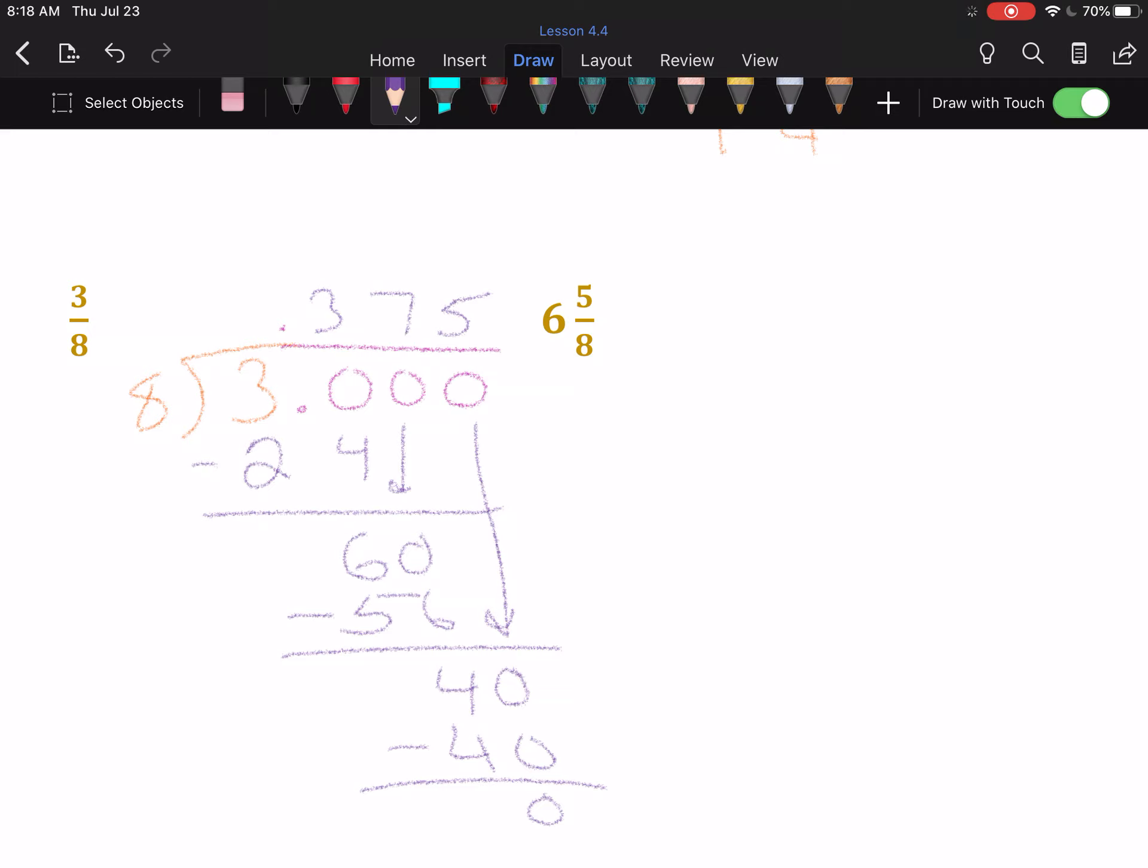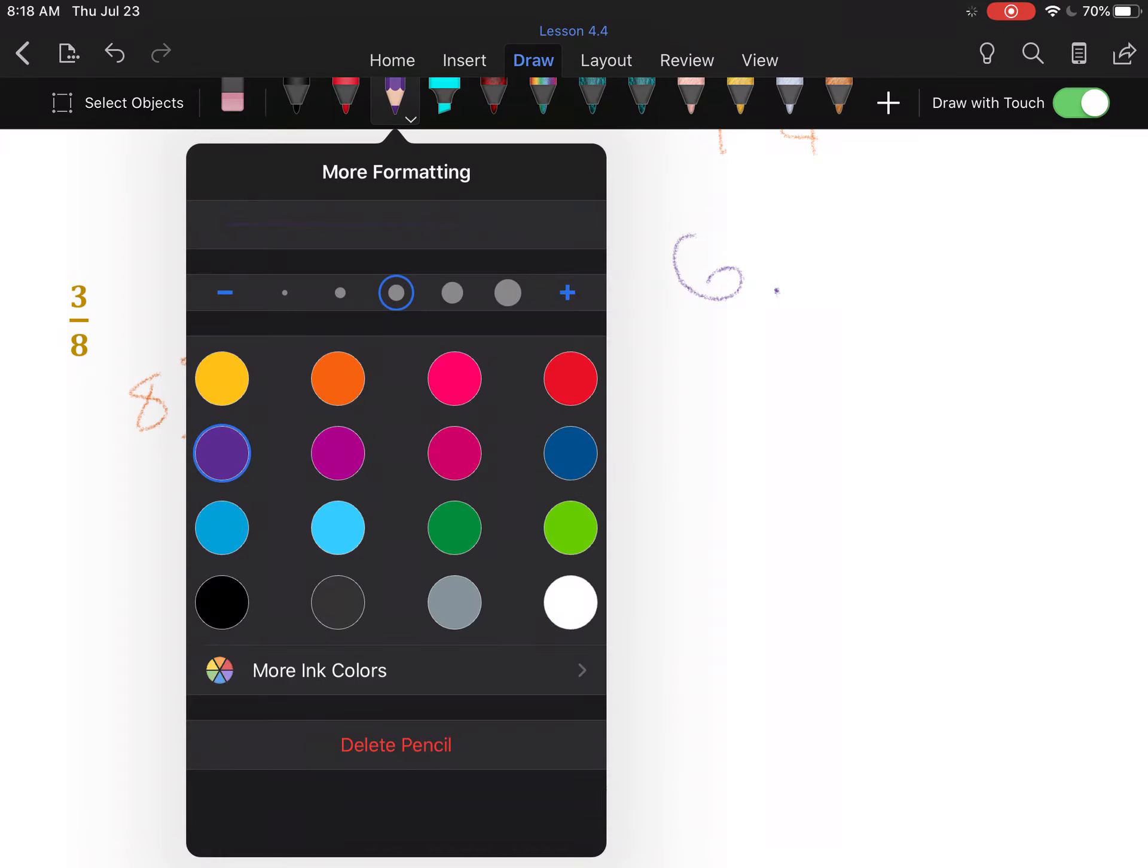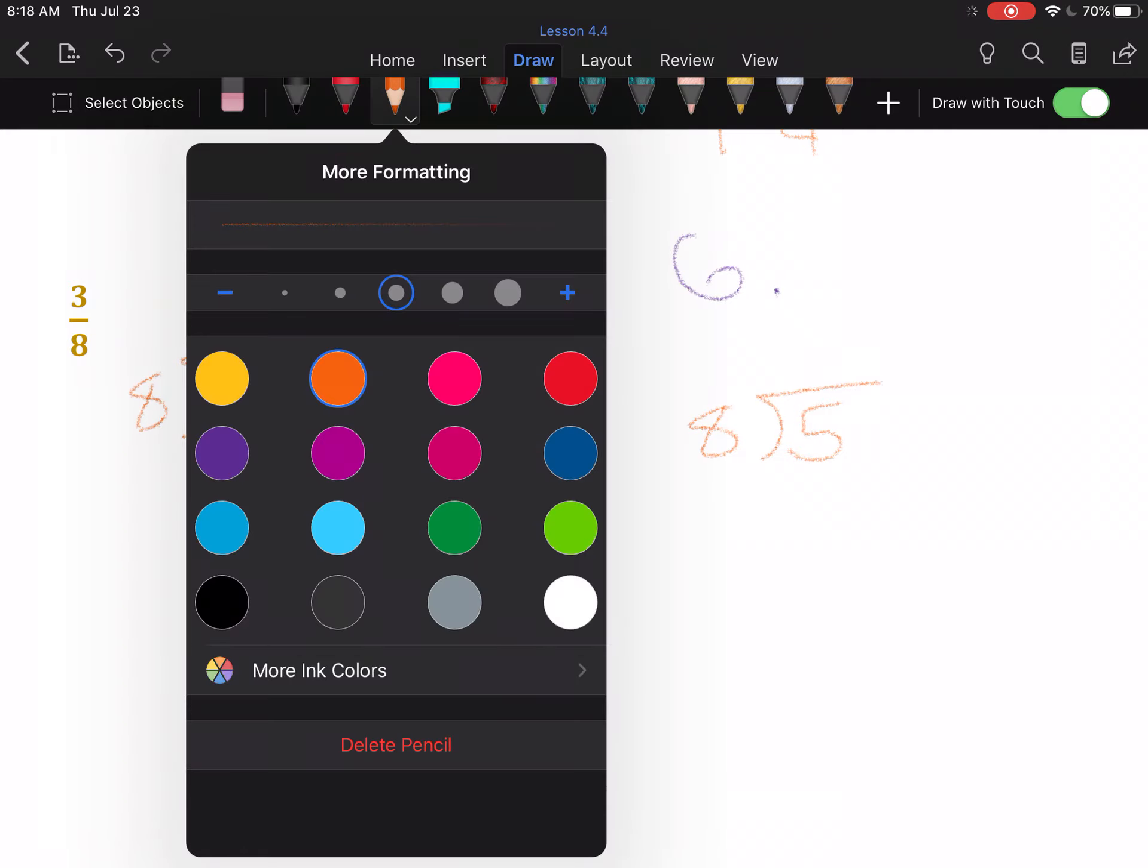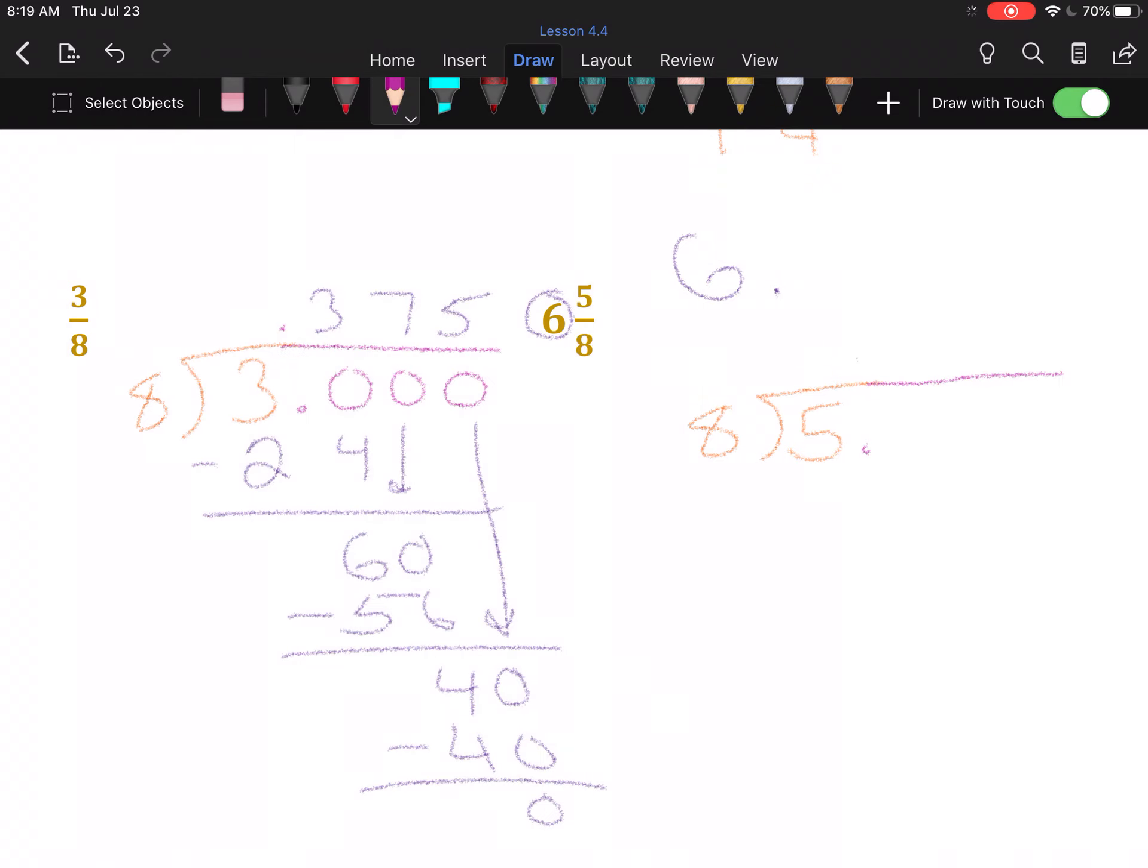For six and five-eighths, the six I can just keep—six point something. We just have to figure out what comes after the decimal point. We do that the same way we just did: five divided by eight. Obviously we need more digits here because eight doesn't go into five. So we put a decimal point after the five, put it above our division bar, and start adding zeros.